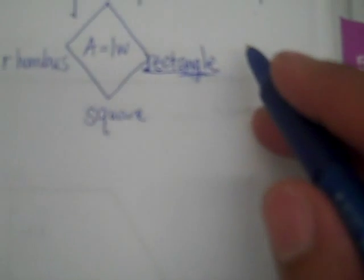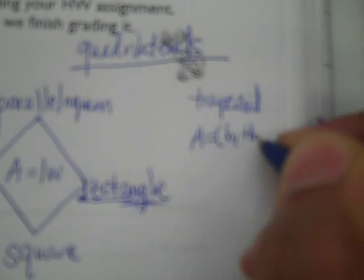The formula for a trapezoid, which only has one pair of parallel sides, is: area equals base 1 plus base 2, that sum divided by 2, then multiplied by the height. So it's area equals (base 1 plus base 2) divided by 2, multiplied by the height.